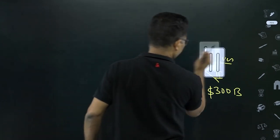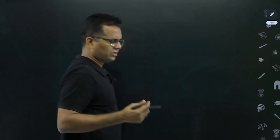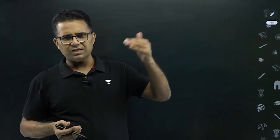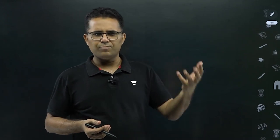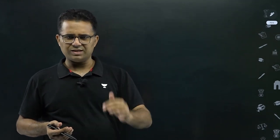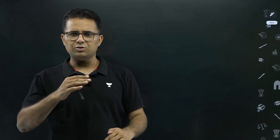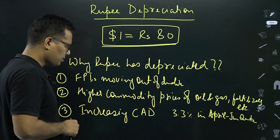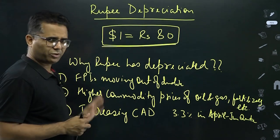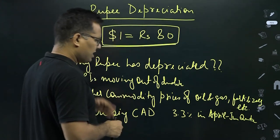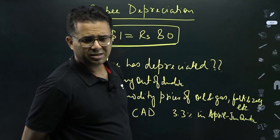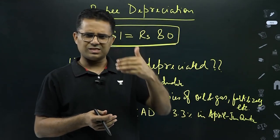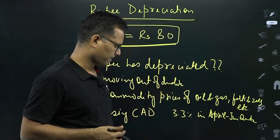So when current account deficit is at a quite high level of 3.3 percent, we are importing more, dollar reserves are decreasing, and when dollar reserves decrease, rupee starts depreciating. These are the reasons why rupee depreciated to 80. Earlier in 2013, the rupee-dollar rate touched around 76 and then came back, but this time it has moved further.